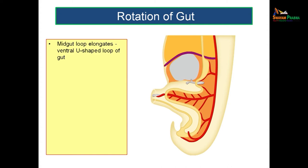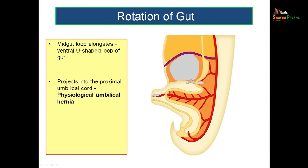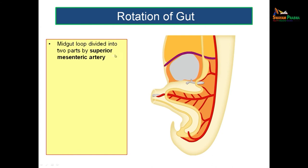Now let us see how this rotation happens, because in the beginning it was just a straight tube, then it gets coiled, then it goes back to its adult position. In the initial period, as a first step, the midgut forms a loop. This loop elongates ventrally into a U-shaped loop that cannot be accommodated in the abdominal cavity because other organs are also developing. At this moment, this loop herniates through the umbilicus and lies outside the abdominal cavity for a particular period so that the other structures can develop simultaneously. This loop projects into the proximal part of the umbilical cord — this is a physiological umbilical hernia, not a pathological herniation. The midgut loop is divided into two parts by the superior mesenteric artery: the proximal or pre-arterial segment and the post-arterial segment.